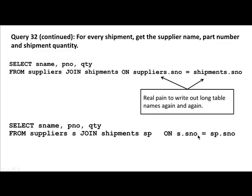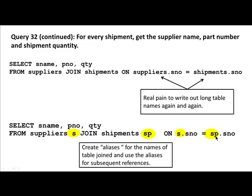So 's' and 'sp' stand for the suppliers table and shipments table respectively. We created aliases for the joined table names and use those aliases for all subsequent references. In fact, sometimes you'll even use the alias in the SELECT clause — we'll see examples of that later. That's the essentials of using aliases.